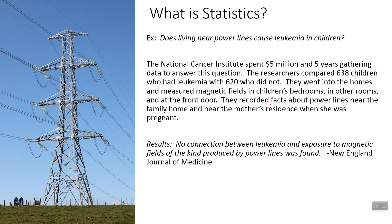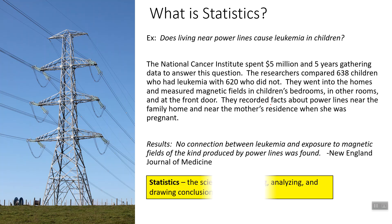So why do I bring up this experiment? Well, this is what statistics is in a nutshell. Statistics is the science of collecting, analyzing, and drawing conclusions from data. They saw an issue — power lines cause cancer. They collected data, they took a sample and checked cancer and power line and magnetic levels. They analyzed it, and then they drew the conclusion that there was no connection between leukemia and exposure to magnetic fields from power lines.